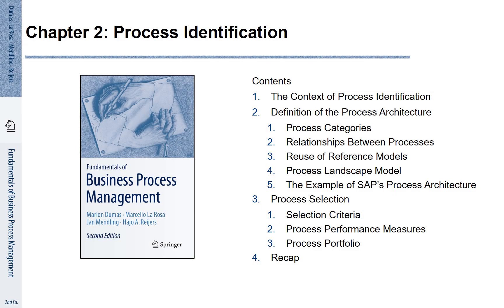Chapter 2 – Process Identification. In this chapter we discuss process identification. First, we look at the context of process identification. Second, we define process architecture. And third, we discuss different selection criteria for processes to be improved.